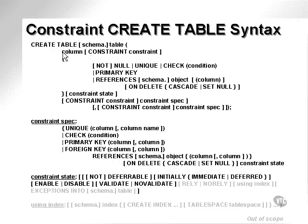Column level means that when you type out the column, you can attach a constraint to that particular column. A table level constraint means that when you've typed in a number of columns, you can assign a specific constraint to the table as a whole. Looking at the constraints in detail, we can assign a NOT NULL constraint to a column, a UNIQUE constraint, a CHECK constraint with a condition — which implies that something must be checked and must be correct — a PRIMARY KEY, and a FOREIGN KEY using the REFERENCES clause.